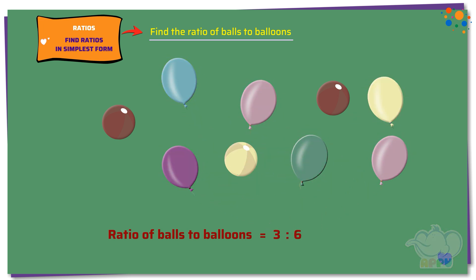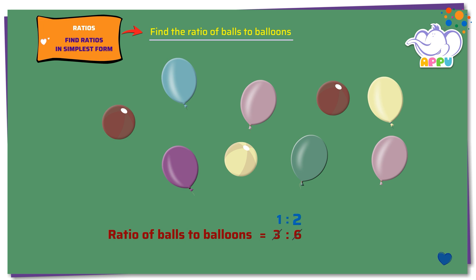We can simplify this as three is a common factor of three and six. Three divides three once and three divides six two times. The simplified ratio is one is to two. So the ratio of balls to balloons is one is to two.